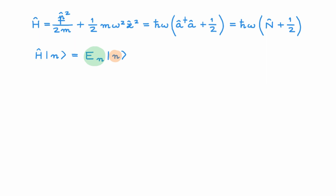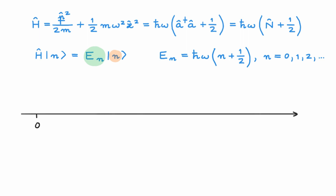In the video on the eigenvalues of the quantum harmonic oscillator, we find that E_n is given by this expression, where n can only take one of the values 0, 1, 2, and so on in integer steps. We can draw the allowed values of energy on this axis. The lowest possible energy corresponds to n equals 0, and it is ½ times ħω. The fact that the lowest energy is not zero is a feature of quantum particles and is radically different to the classical case, where a particle can be at rest in a harmonic potential with zero energy. This lowest energy is typically called the zero point energy of the system.